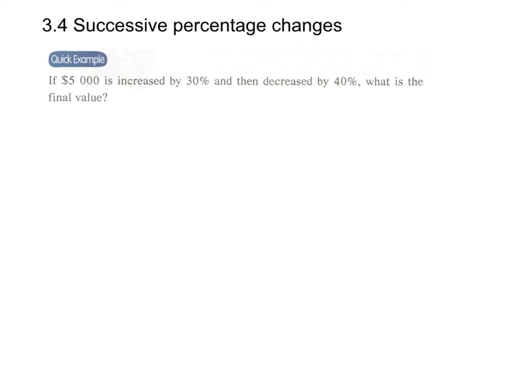Successive percentage changes - the same formula can be applied again. Let's do a quick example: If we have $5,000 and it is increased by 30% and then decreased by 40%, what is the final value?